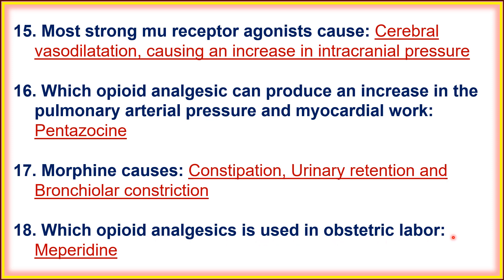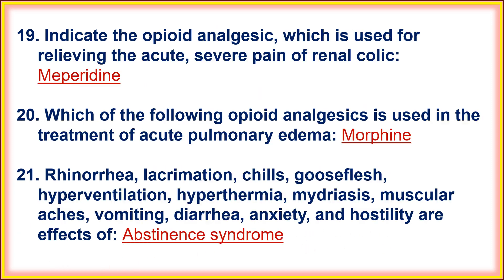Eighteenth, which opioid analgesic is used in obstetric labor — means during delivery? That is mepiridine. Nineteenth, which opioid analgesic is used for relieving the acute and severe pain of renal colic — during kidney stone pain or renal colic? Mepiridine is helpful.